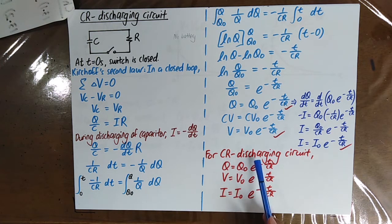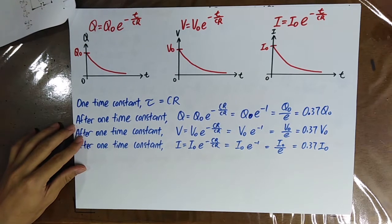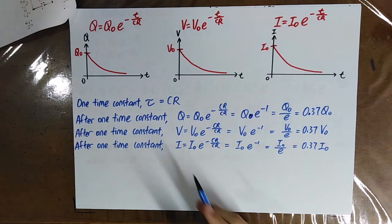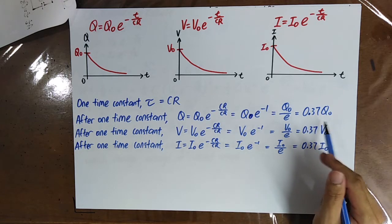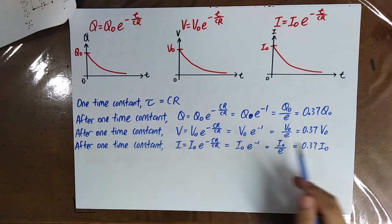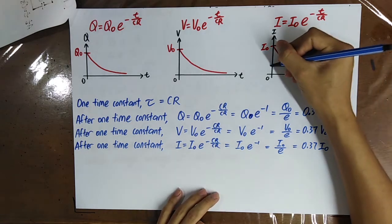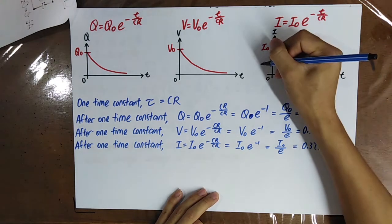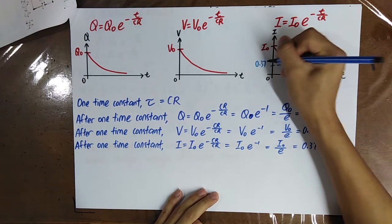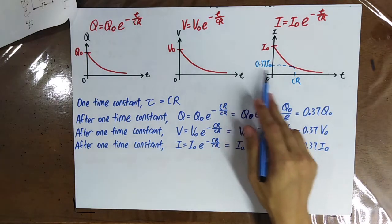For the CR discharging circuit, you get these three formulas. You can then plot them on a graph. After one time constant, Q equals 0.37 Q naught, V equals 0.37 V naught, and I equals 0.37 I naught. So after one time constant, I will become this value.